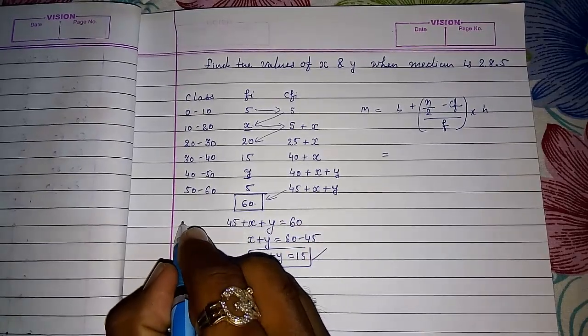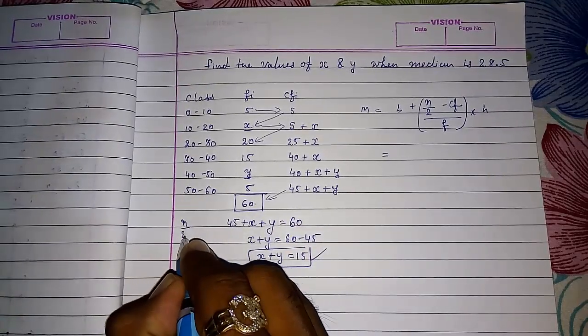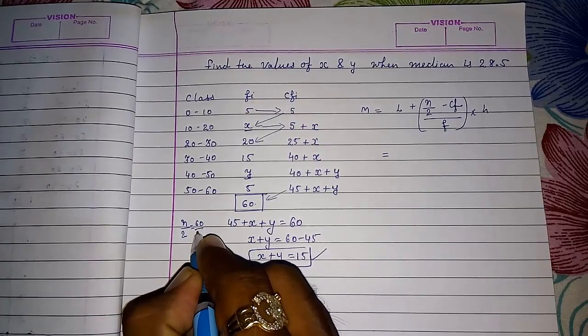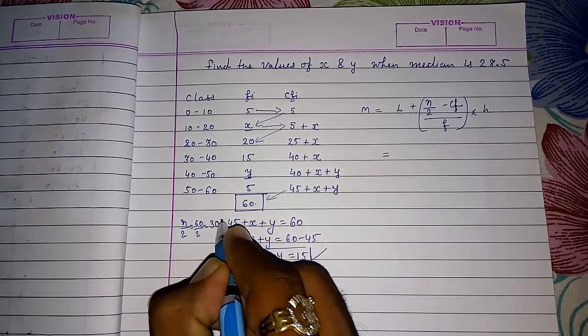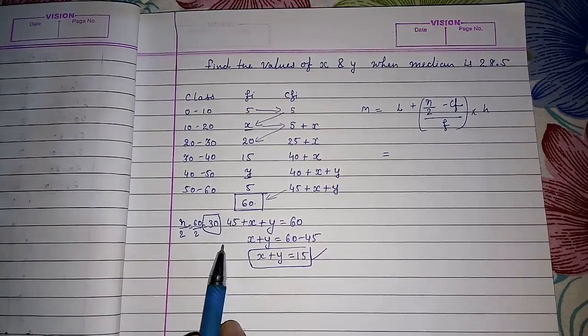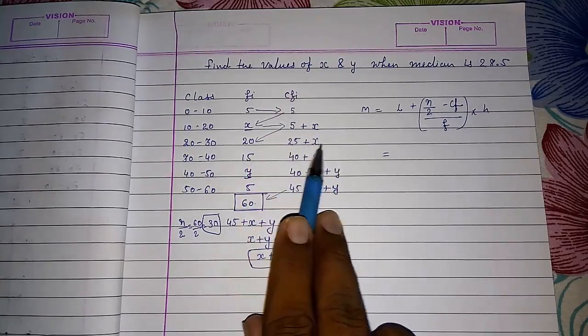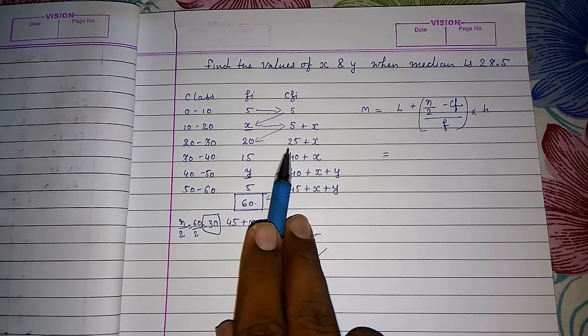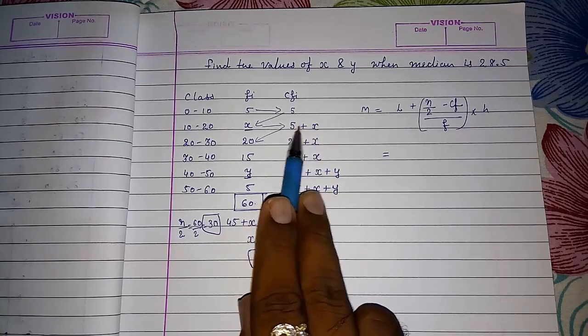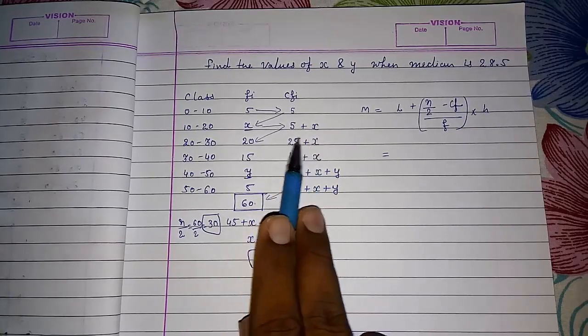Look here, our N is 60. So N by 2 will be 60 by 2, 30. But the problem is here in cumulative equation we don't have 30 anywhere. Directly we want to know that it can be also, X plus Y can be also 30. This can be also 30.